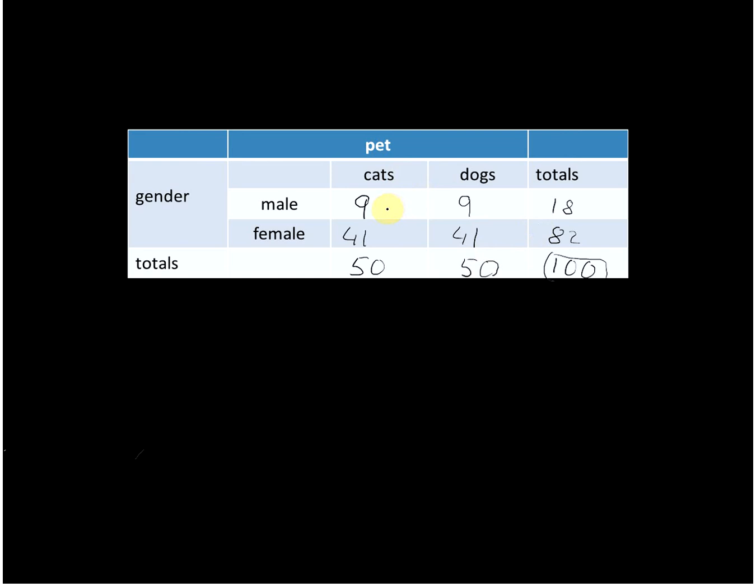This particular table is called a contingency table. Because it has two columns with data and two rows with data—male cats/dogs, female cats/dogs—it is called a two by two contingency table. Please note we don't count the rows or columns where we've set up the totals. This just helps us to do calculations.